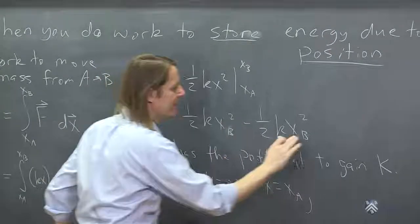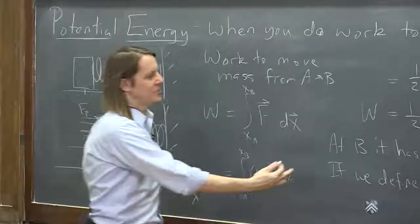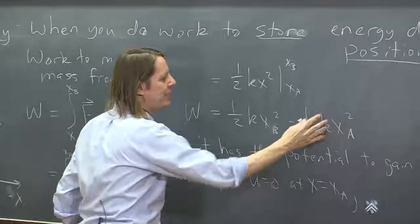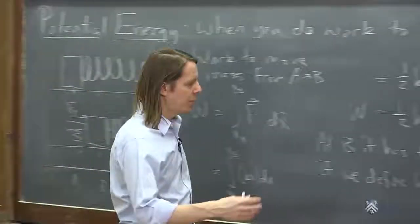So if we define u = 0 at x equals x_A, basically say that term is 0, then the potential energy is 1/2 kx_B squared, or just 1/2 kx squared.